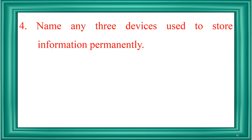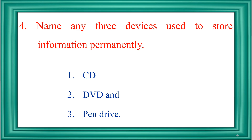The fourth question: Name any three devices used to store information permanently. The first one is the CD, the second one is the DVD, and the third one is the pen drive. These are used to store information permanently.